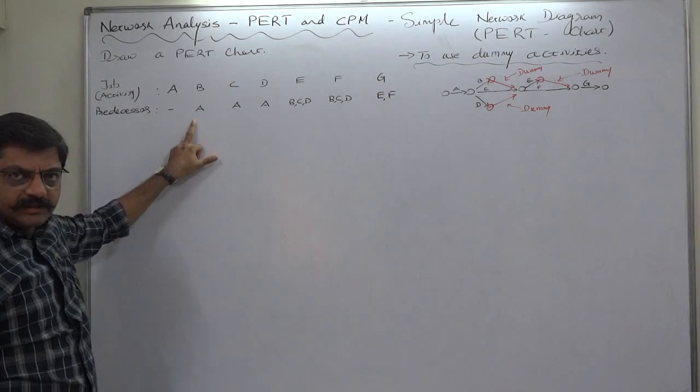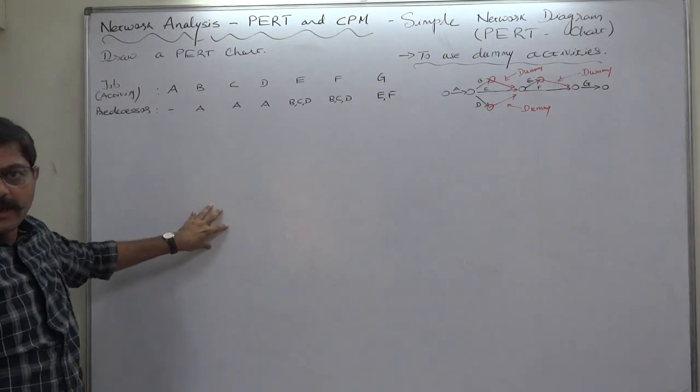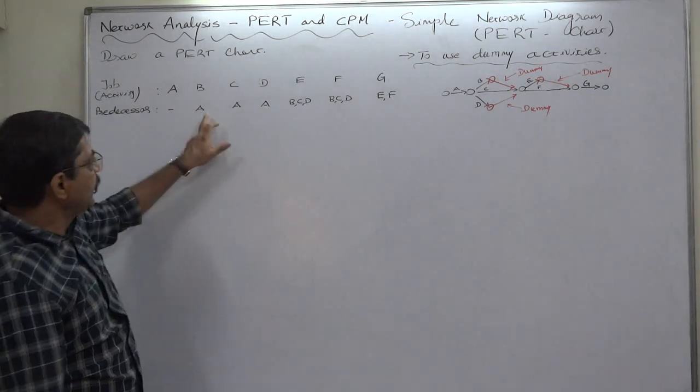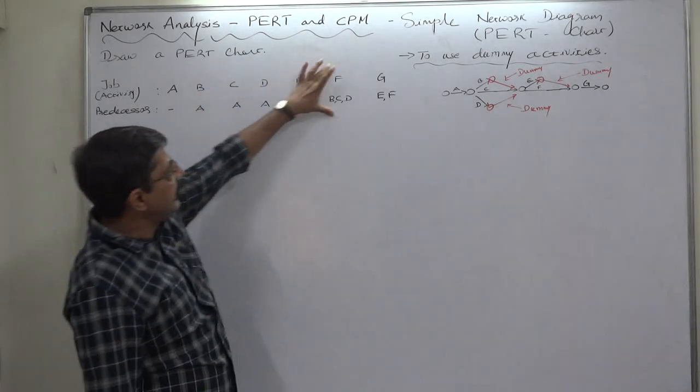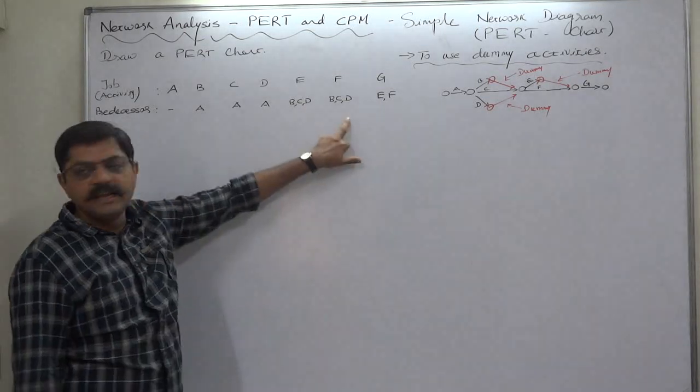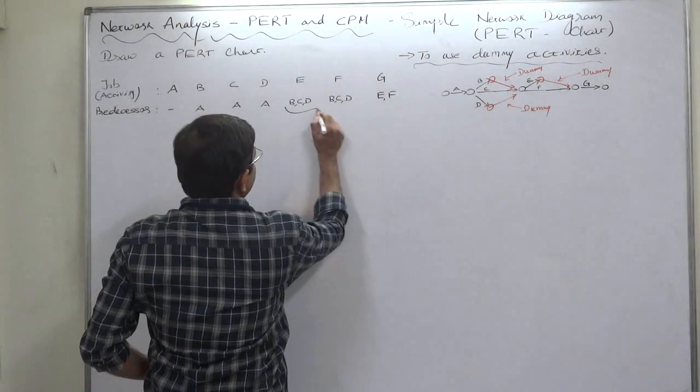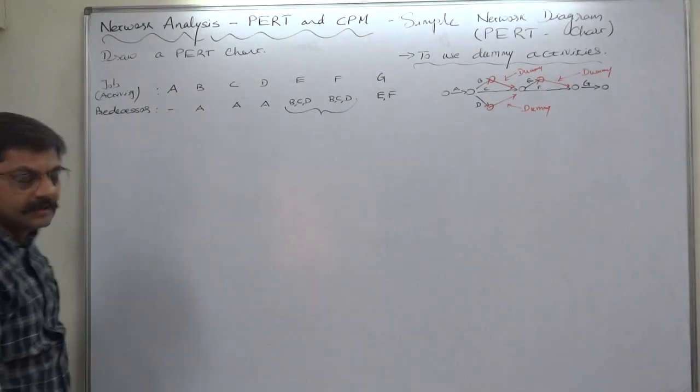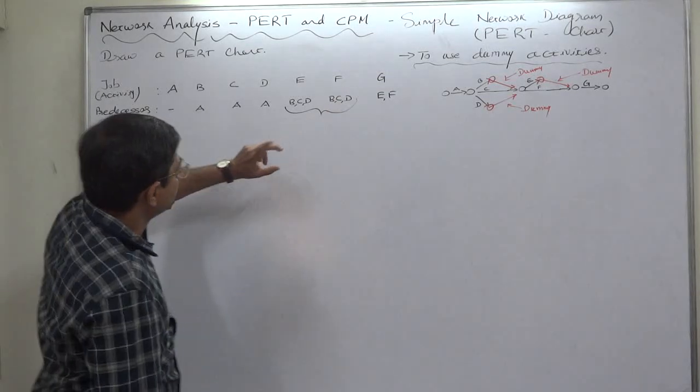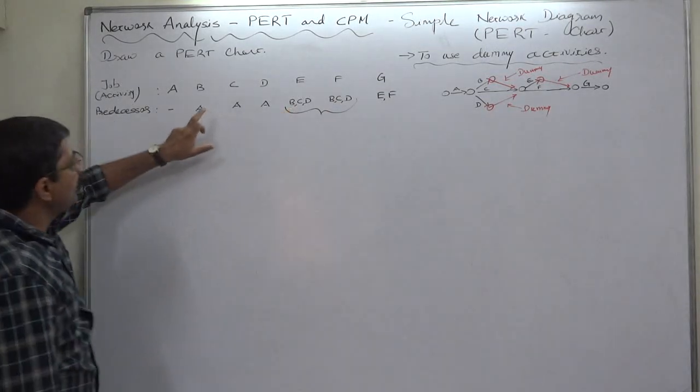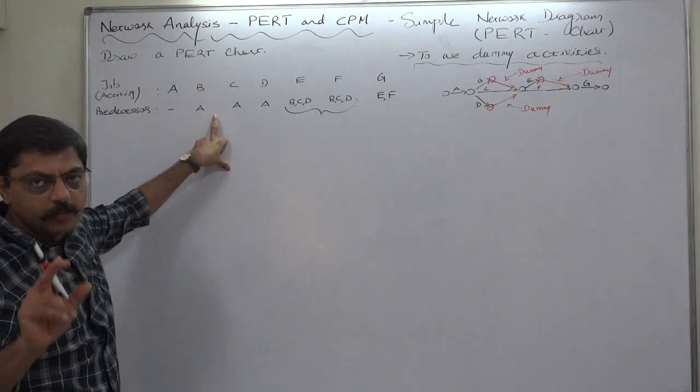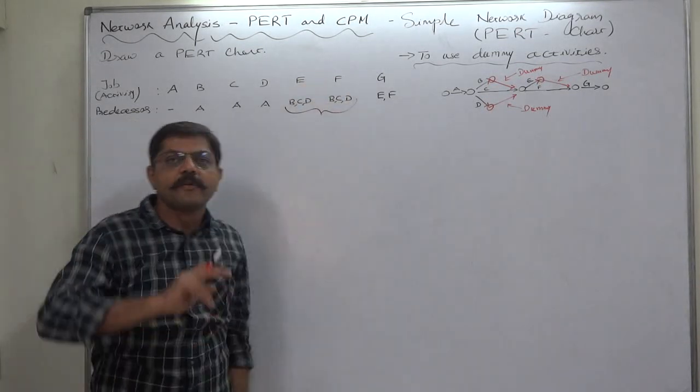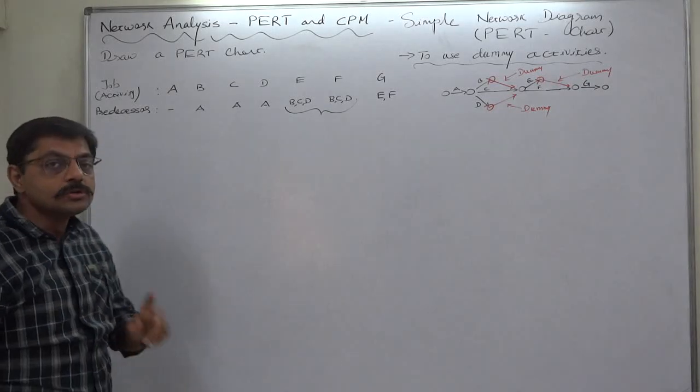That means the event at the end of A is a burst event. After ending A, three activities will start. E and F have commonly B, C, and D as predecessors. This is the point why I selected this problem to discuss here. B, C, and D all have A as their starting point, and B, C, and D all have E and F as common successors.